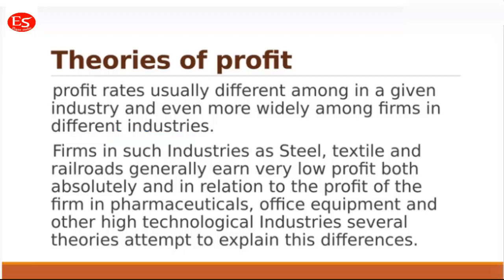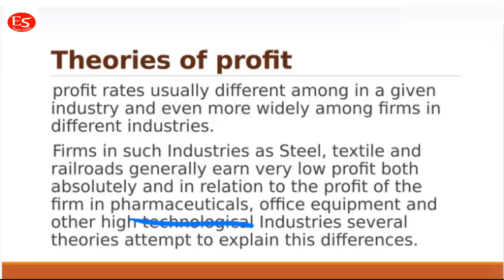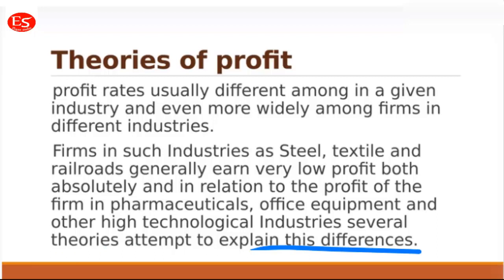Profit rates vary widely across different industries and firms. Industries like steel, textiles, and railroads — which require huge investment — tend to earn very low profit, both in absolute terms and relative to industries like pharmaceuticals, office occupants, and high-technology sectors. There are several theories that attempt to explain these differences in profit rates.